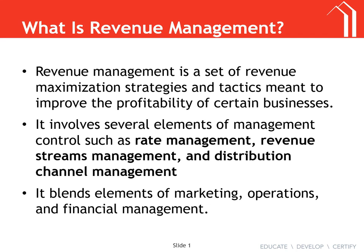Distribution channel management — how do we manage where we get our rooms from? The most ideal way for people to book hotel rooms is directly, whether online or through our website. When guests book direct, we get 100% of that revenue and don't have to pay a percentage or commission to a third party. Third parties are a necessary part of life though.